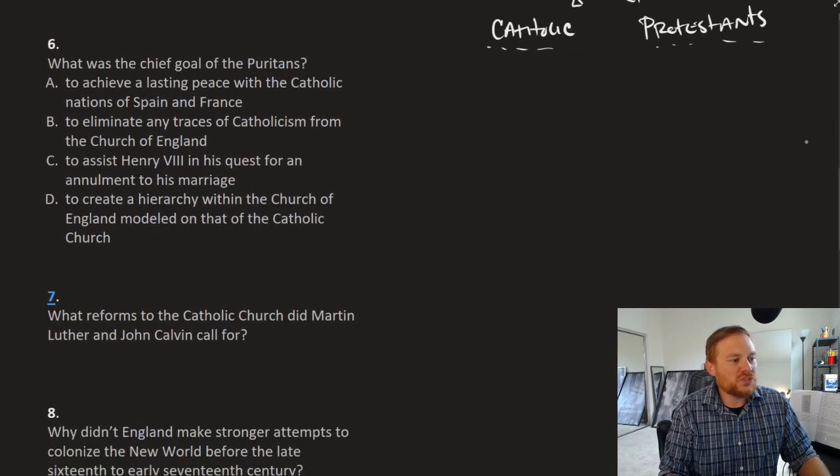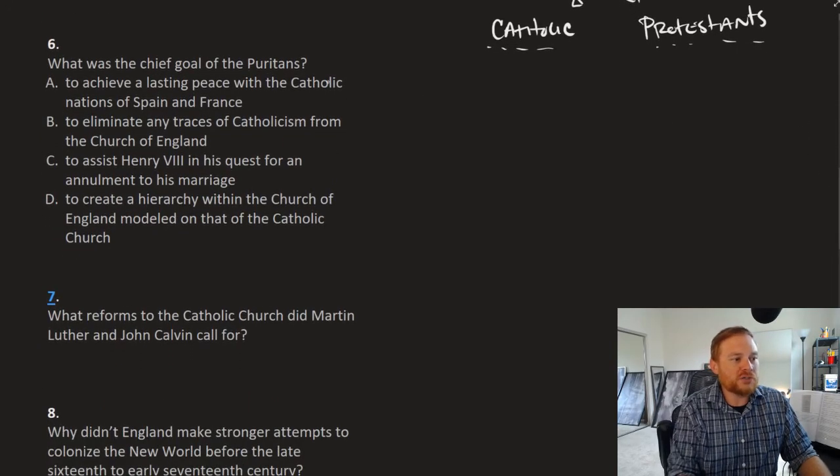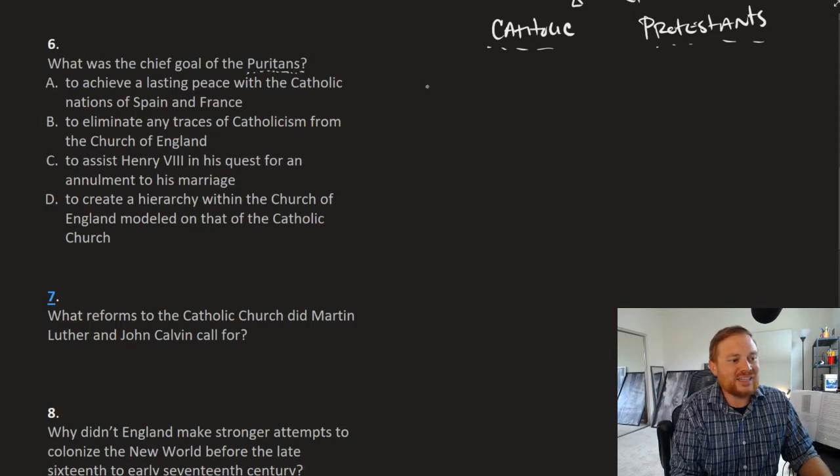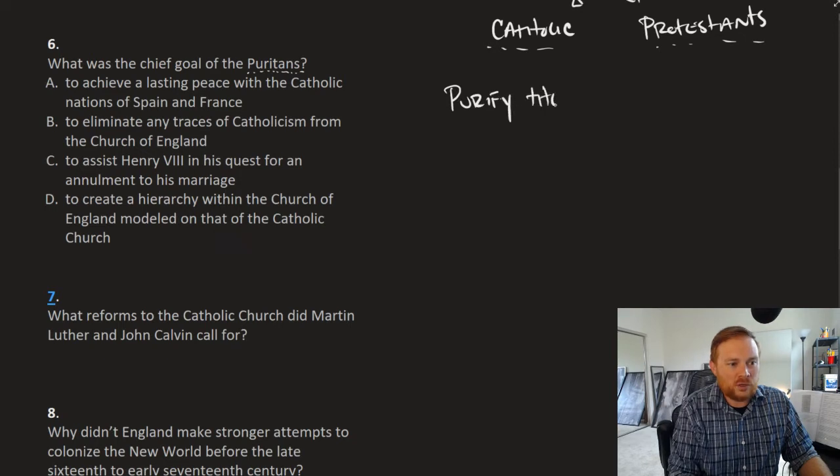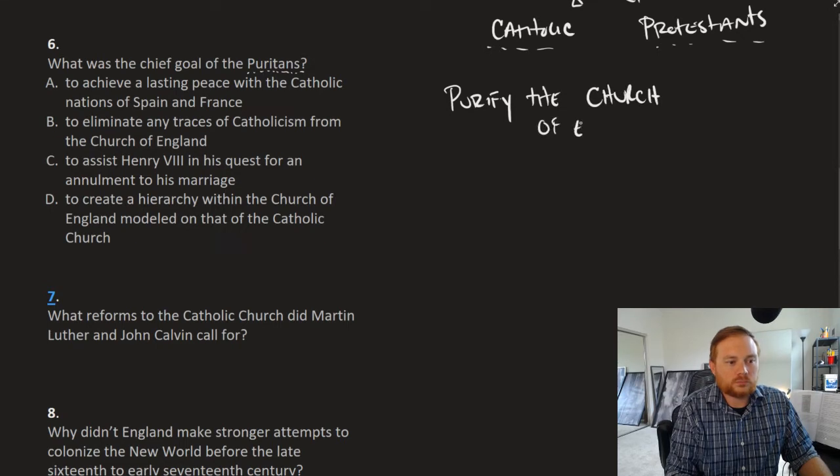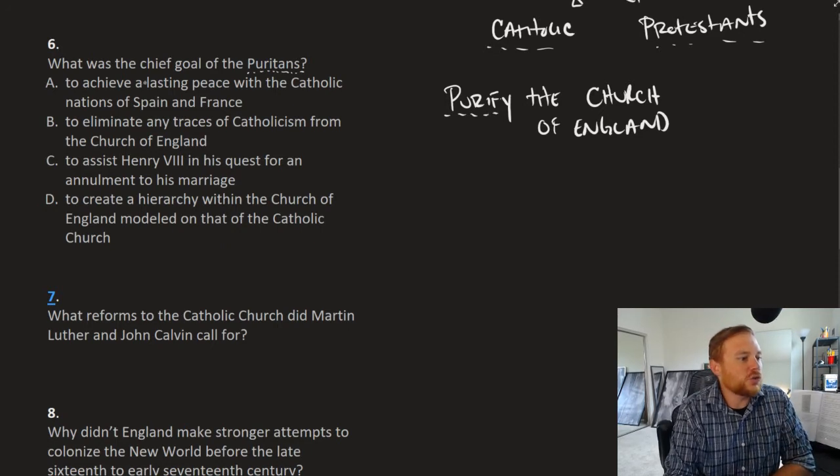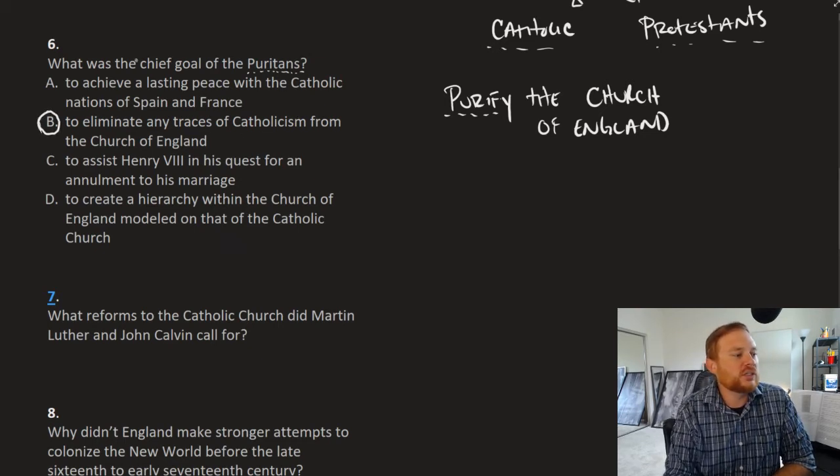Question number six, what was the chief goal of the Puritans? You can get the right answer in the name. Puritans wanted to purify the Church of England. The goal of the Puritan Church was to purify the Church of England. So the correct answer would be B, to eliminate any traces of Catholicism from the Church of England. Answer choice A, achieve lasting peace with Catholic nations. Nope, the Puritans were strictly anti-Catholic.